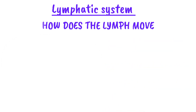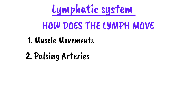So how does lymph move? The circulatory system has the heart to pump blood, but the lymphatic system does not have a pump. Instead, lymph moves through the body due to three mechanisms: number one, muscle movement — when we breathe or exercise, our muscles squeeze and push the lymph forward through the vessels; number two, the pulsing of arteries — nearby arteries pulse with each heartbeat, gently moving the lymph along; and number three, one-way valves — the lymphatic vessels have valves that keep lymph from flowing backward, ensuring it moves in the right direction.